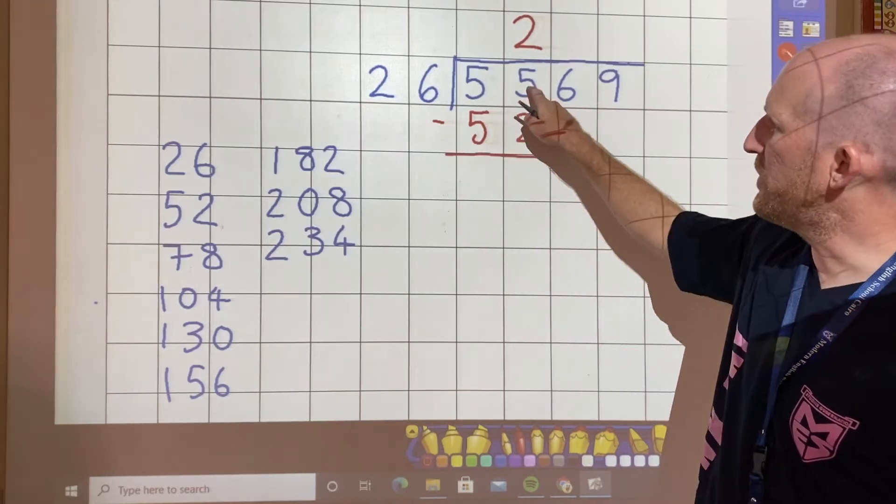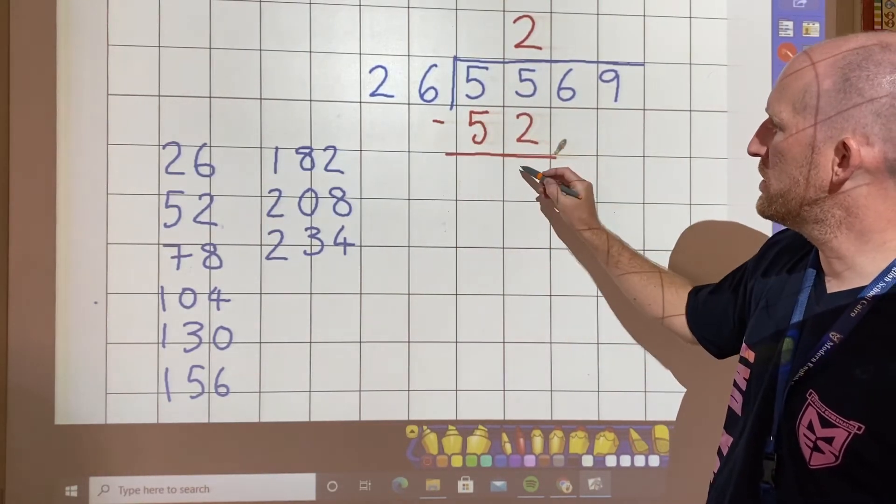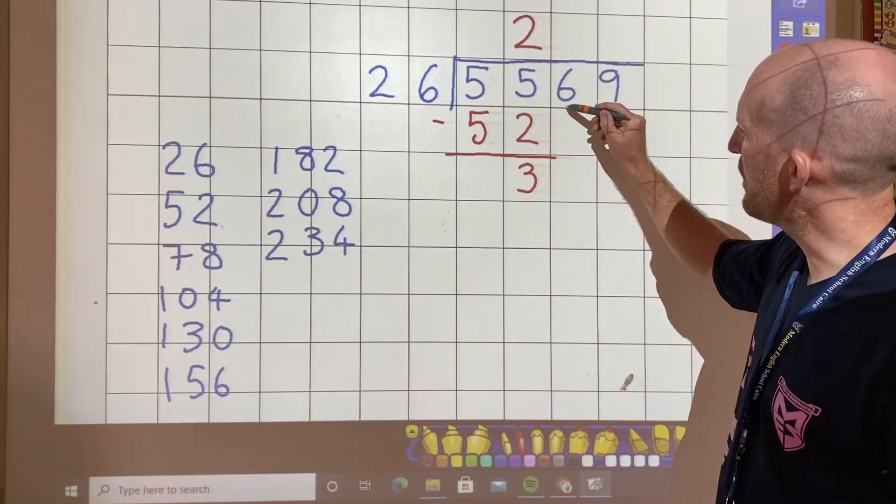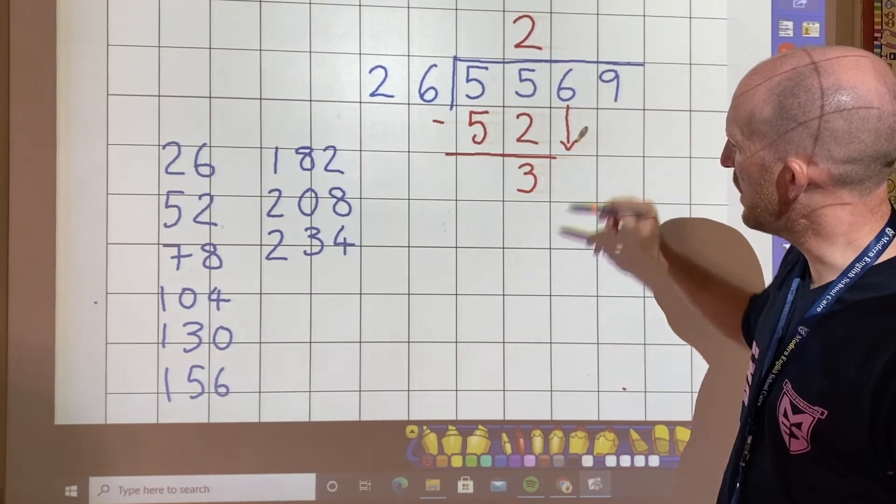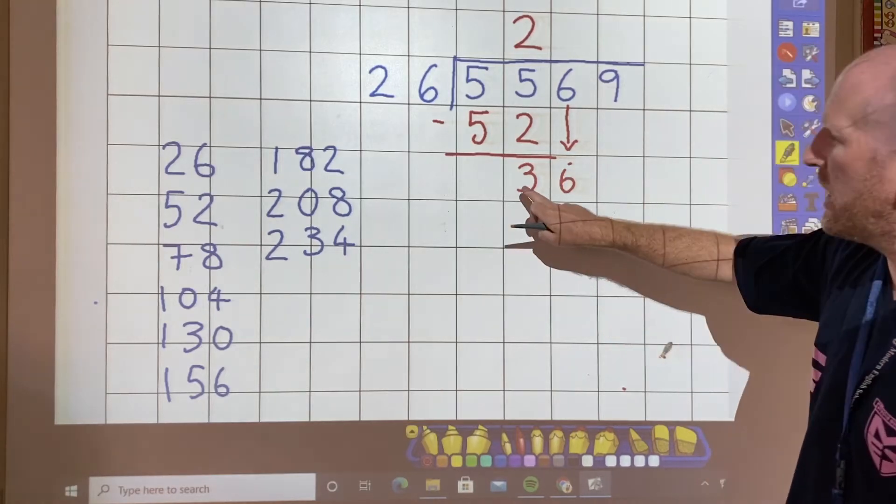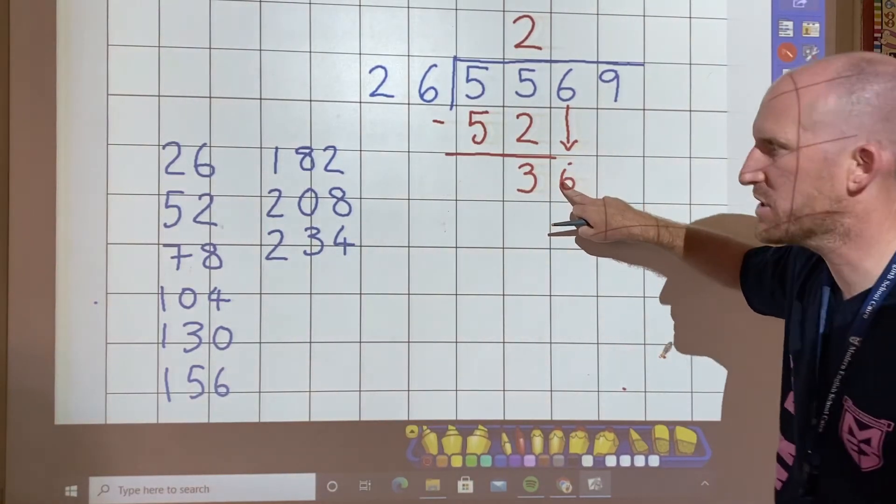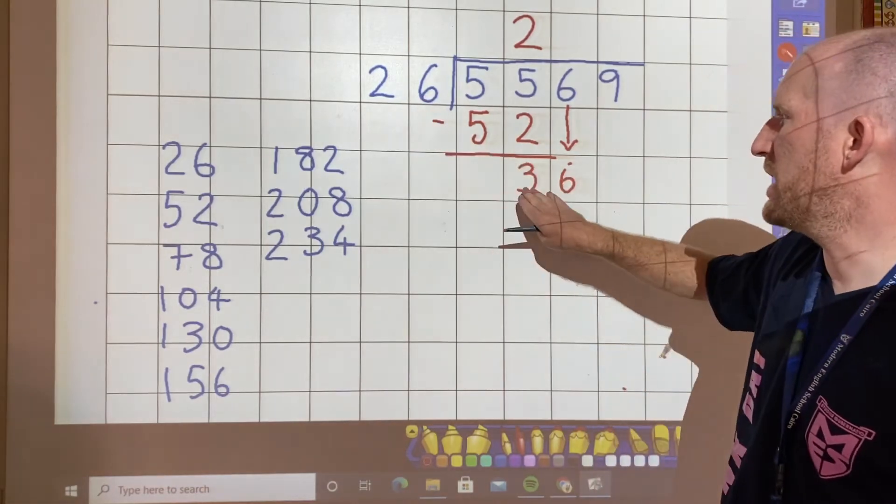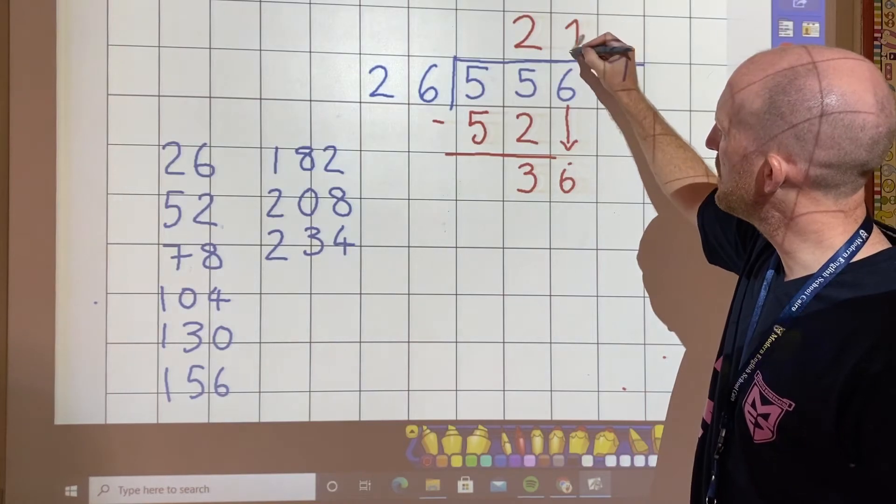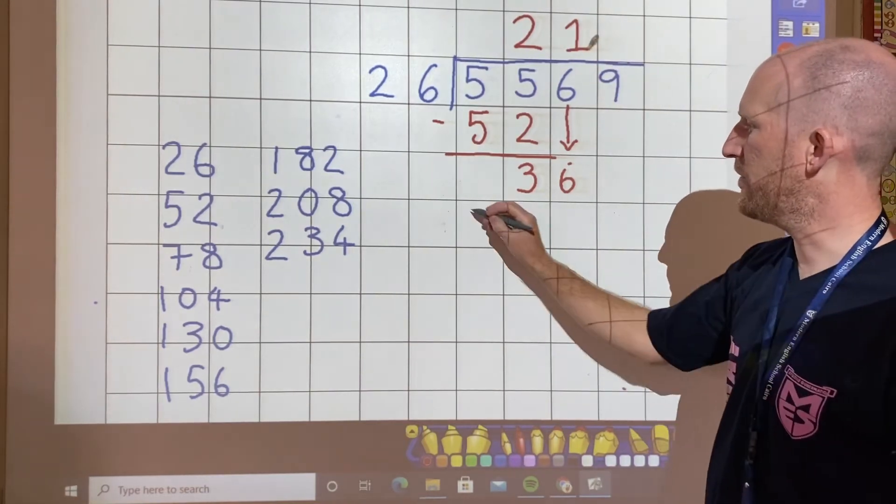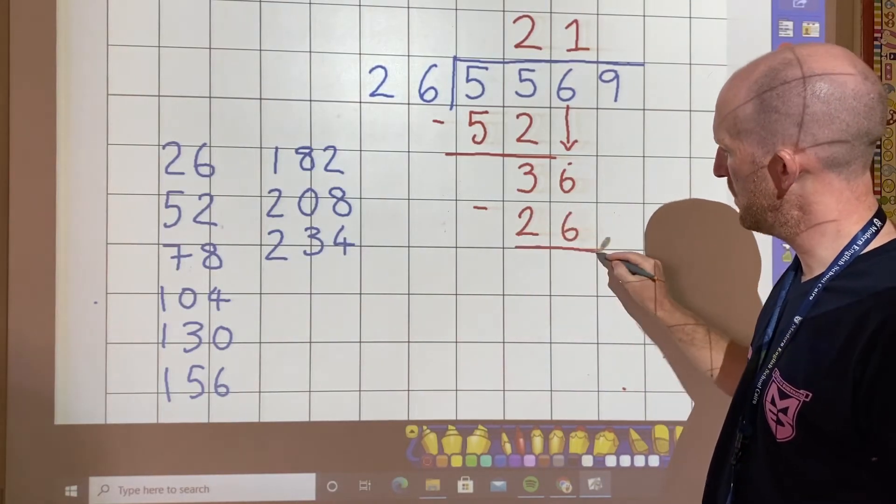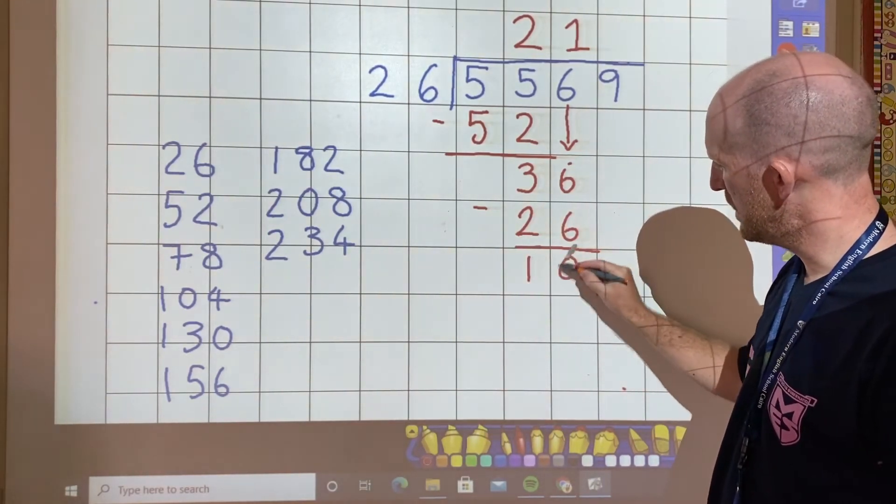So 55, take away 52, leaves me with three remainder. Now I'm going to bring this six down. Okay? See how this six is now being brought down? So now I have 36. How many 26s in 36? Well, there's just one. And if I take away 126, I am left with 10.